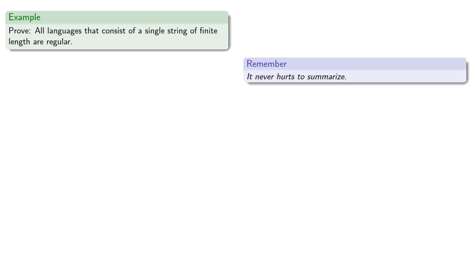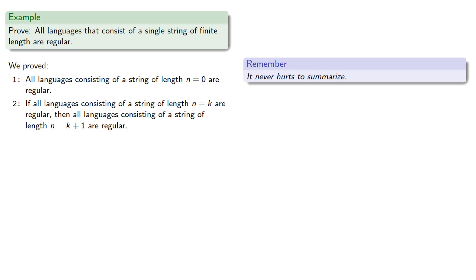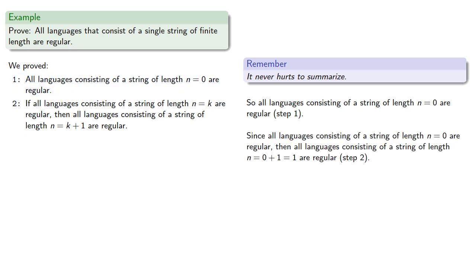And remember, it never hurts to summarize. So we've proved all languages consisting of a string of length n equals 0 are regular, and if all languages consisting of a string of length n equals k are regular, then all languages consisting of a string of length n equals k plus 1 are regular. So: all languages consisting of a string of length n equals 0 are regular — that's step 1. And since all languages consisting of a string of length n equals 0 are regular, then all languages consisting of a string of length n equals 0 plus 1 — that is, 1 — are regular.